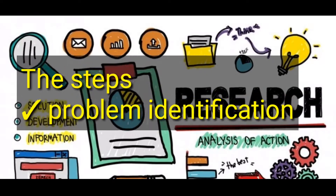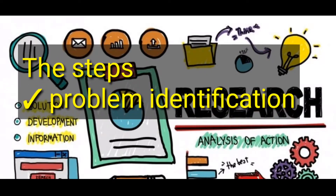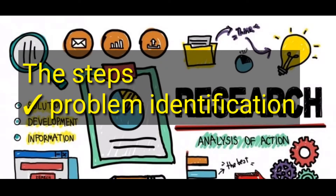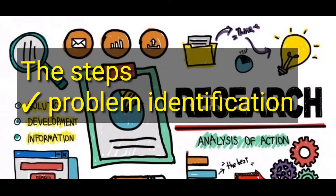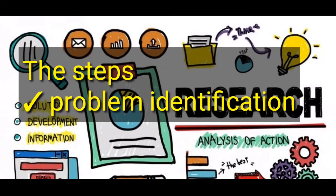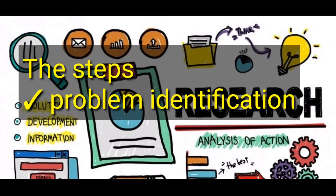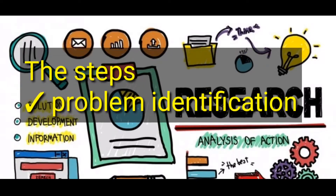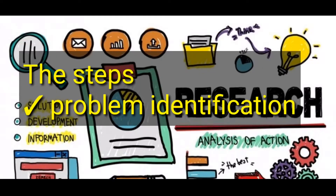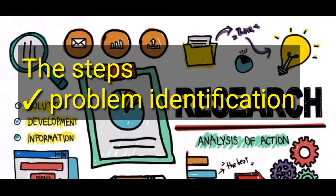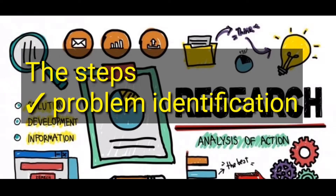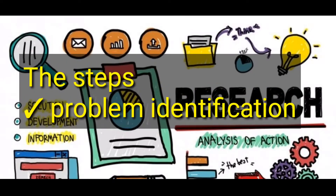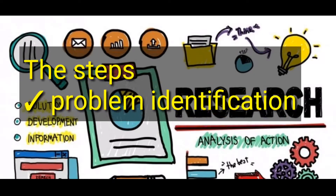Let's look at the steps in the research process. The first step is problem identification. When you're carrying out research, the first thing you're supposed to do is identify a problem, because no research can be carried out without a problem. You need to first find out which problems society is facing, so that you can do research on how to solve that problem.